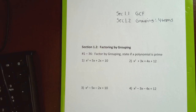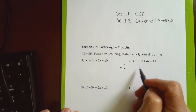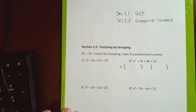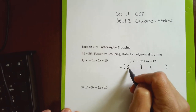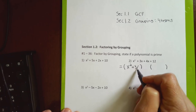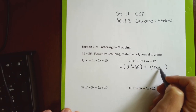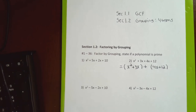The instructions say: factor by grouping, then state if a polynomial is prime — I'll explain what that is when we get to a problem where factoring by grouping doesn't work. For each problem, I'm going to break it up into two factoring problems by introducing two parentheses: the first two terms go in one parenthesis and the second two terms in another.